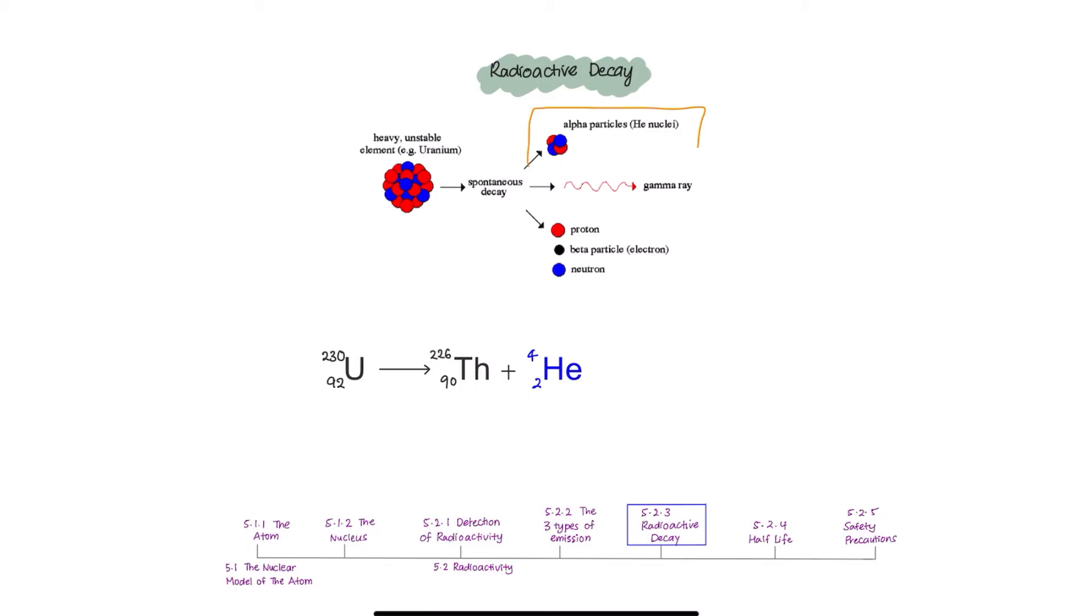Let's see what happens when a nucleus emits an alpha particle. Alpha is a helium nucleus. Therefore, two protons and two neutrons are emitted. The mass number decreases by four and the atomic number, which is the proton number, decreases by two. This equation here is an expression of a radioactive reaction which we call as a decay equation.